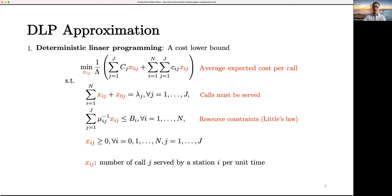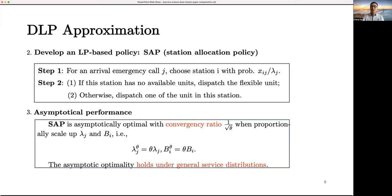The first is a deterministic LP approximation. We first use fluid relaxation to get a lower bound to the original problem. Decision variable X_ij here denotes calls served by station i for call j per unit time. Calls must be served, and we also need to satisfy the resource constraint. The solution suggests the station allocation policy, which we call SAP here. The idea is that it first selects station i with probability X_ij over lambda_j. If the station has no available unit, we will dispatch the flexible units. Our policy is asymptotically optimal with convergence ratio 1 over square root of theta, and this holds under general service time distributions.